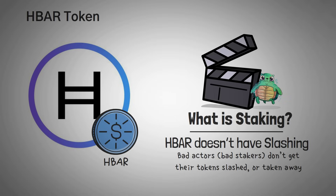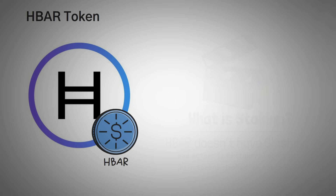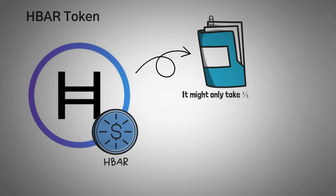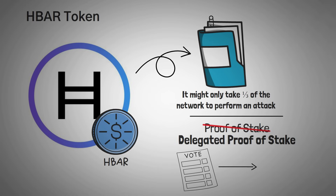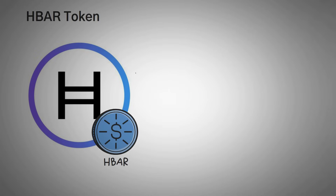The reasoning behind no slashing is basically that slashing doesn't work — though this, combined with Hedera's documentation mentioning it might only take a third of the network to perform an attack, is somewhat alarming. Also, technically this is not a standard proof-of-stake mechanism but a delegated proof of stake, because you give your voting power to one of the 39 mainnet node companies who votes on your behalf. You can't make your own votes — you can only delegate your power to someone else.